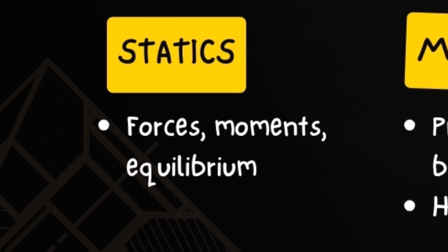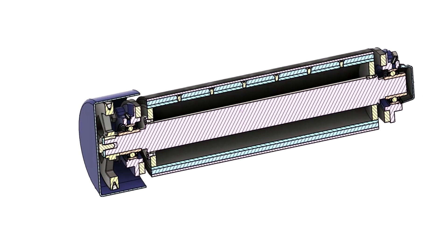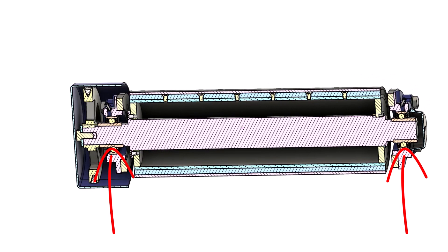Statics focuses on analyzing and understanding forces in equilibrium, which is essential for designing stable structures and mechanisms under various loads. The drive shaft of the conveyor has two reaction forces where the bearings are. The shaft is loaded by its own weight, belt weight, and the weight of the cargo transported on the belt — that results in the bending moment of the shaft. You will use statics on a daily basis, consciously or unconsciously, whether you are making a simple fixture or a complex assembly.